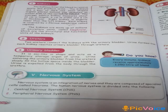The kidneys are a pair of dark red bean-shaped organs placed behind the abdomen on either side of the vertebral column. The kidneys filter the blood to remove waste and produce urine.